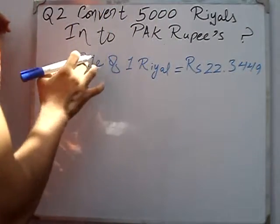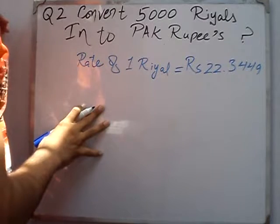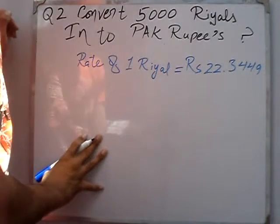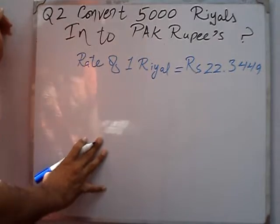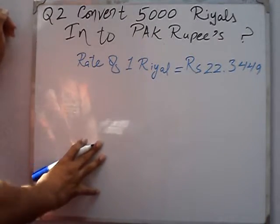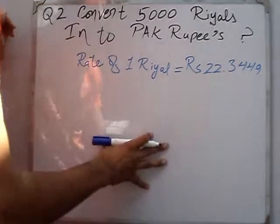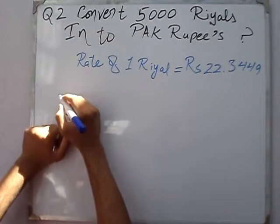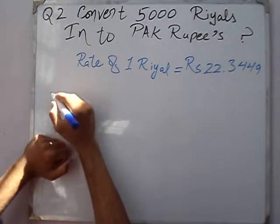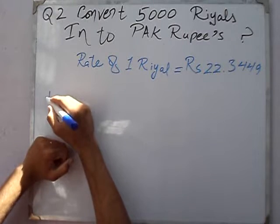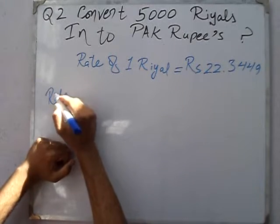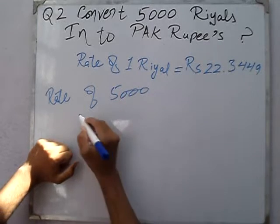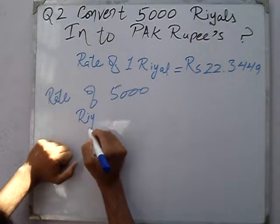Rate of 5 riyals — 1 riyal kitna hai? 22.3449 riyals. Toh, 5,000 riyals kiske barabar ho jaenge? Rate of 5,000 riyals — Pakistan rupees kiske barabar hoga?